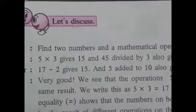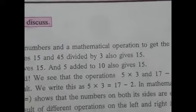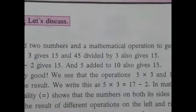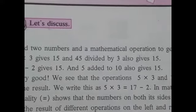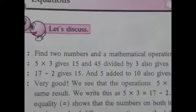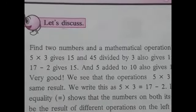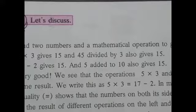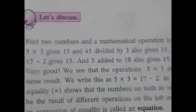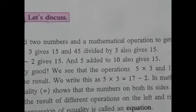If I ask you to find two numbers and a mathematical operation to get the answer 15, students, you can say 5 multiplied by 3 gives 15, 45 divided by 3 also gives 15, and 17 minus 2 also gives 15, and 5 added to 10 also gives 15.